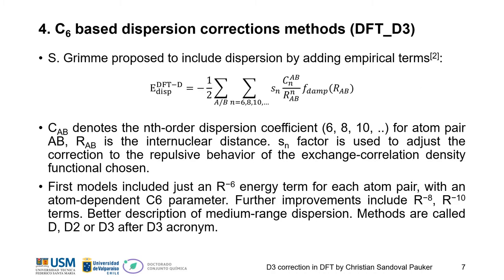So we have here a C6-based dispersion correction method, that is the DFT-D3. Grimme proposed to include the DFT-D dispersion by adding empirical terms in the form of this equation, where the term CAB denotes the N-order dispersion coefficient C6 or C8 or C10 for the atom pair, RAB is the internuclear distance, and the SN factor just adjusts the correction to the repulsive behavior of the exchange-correlation of the density functional chosen. The first model just included an R⁻⁶ energy term for each atom pair with an atom-dependent C6 parameter, but further improvements include also the R⁻⁸ and R⁻¹⁰ terms, so we have a better description of medium-range dispersion.